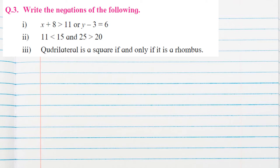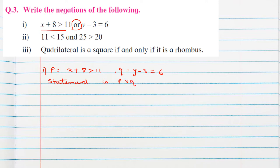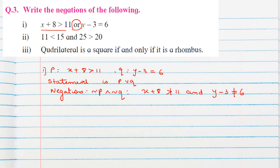Question number 3: Write the negation of the following statements — both compound and quantified statements. For statement 1, the connective word is 'or'. Let P be 'x + 8 > 11' and Q be 'y − 3 = 6'. The statement is P or Q. The negation of P or Q is: negation P and negation Q, giving us 'x + 8 is not greater than 11 and y − 3 is not equal to 6.'